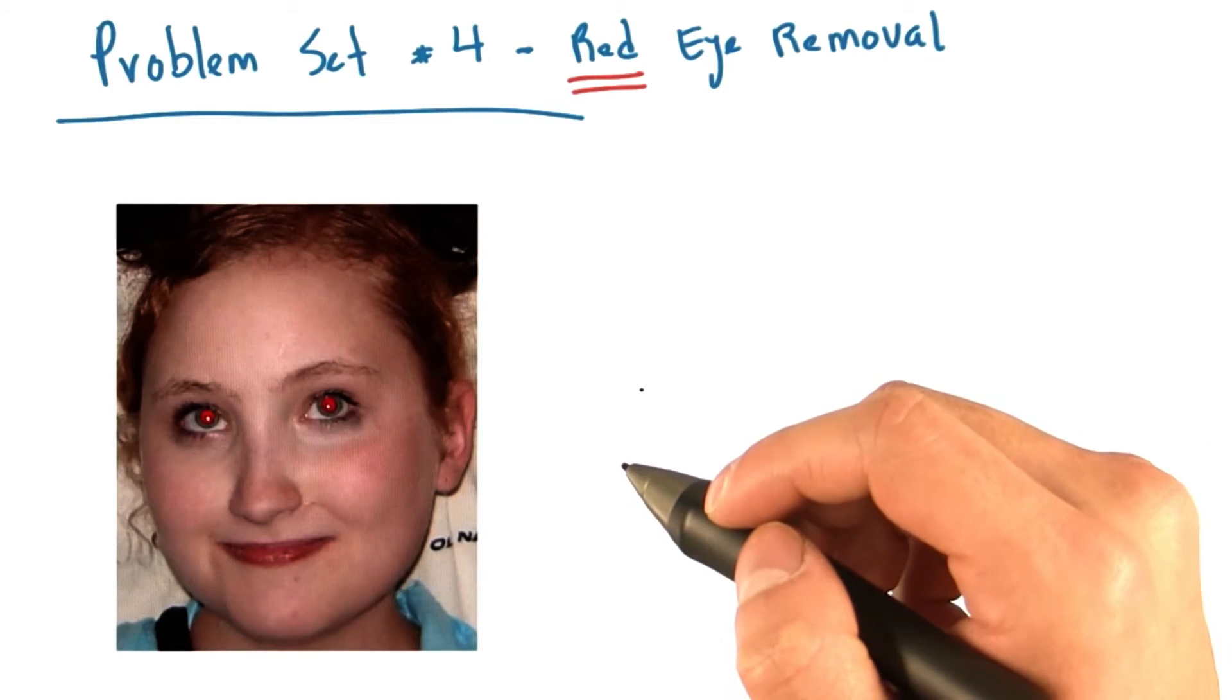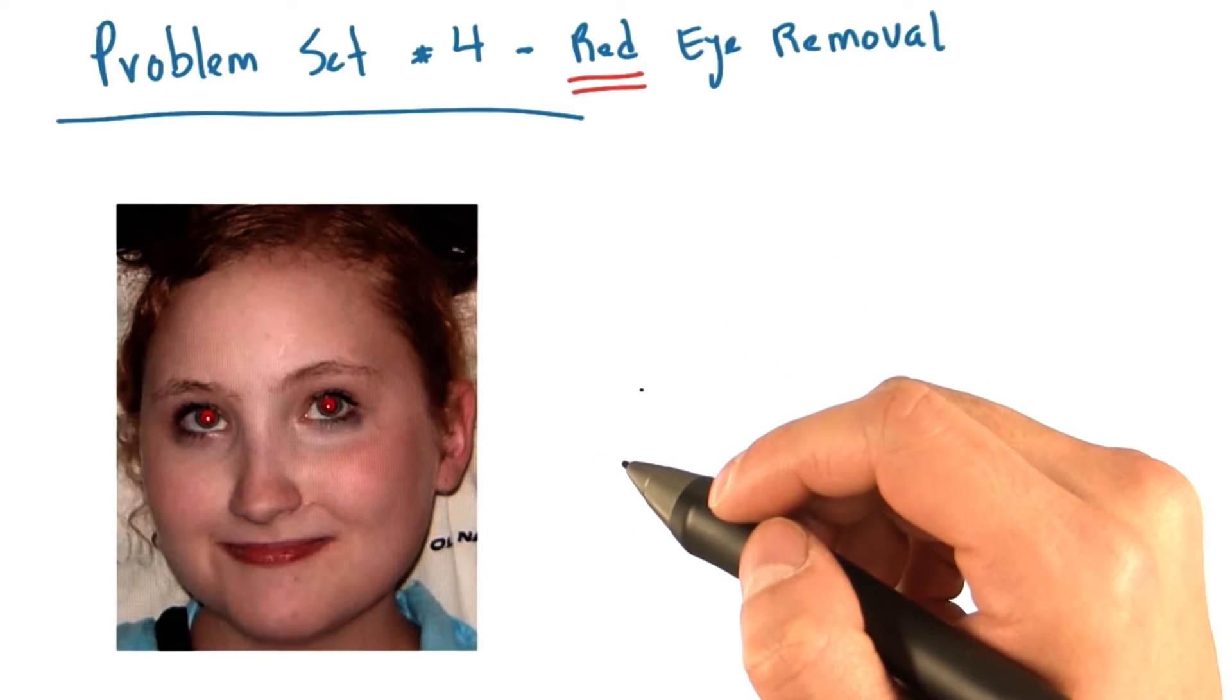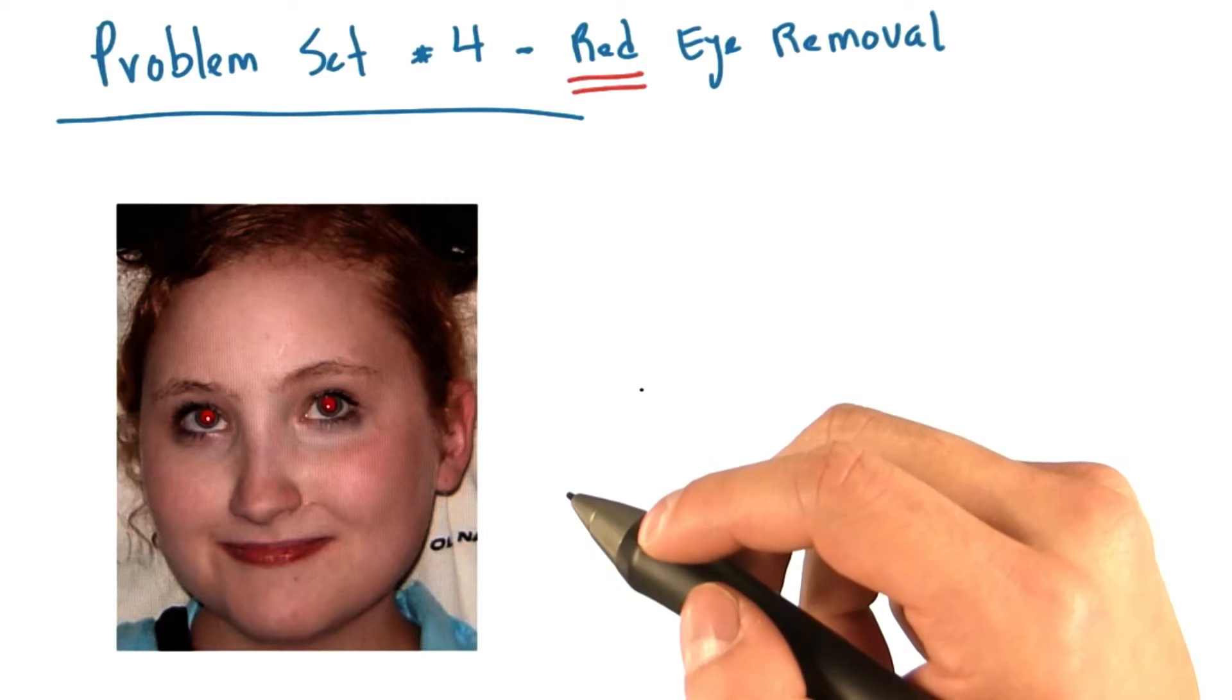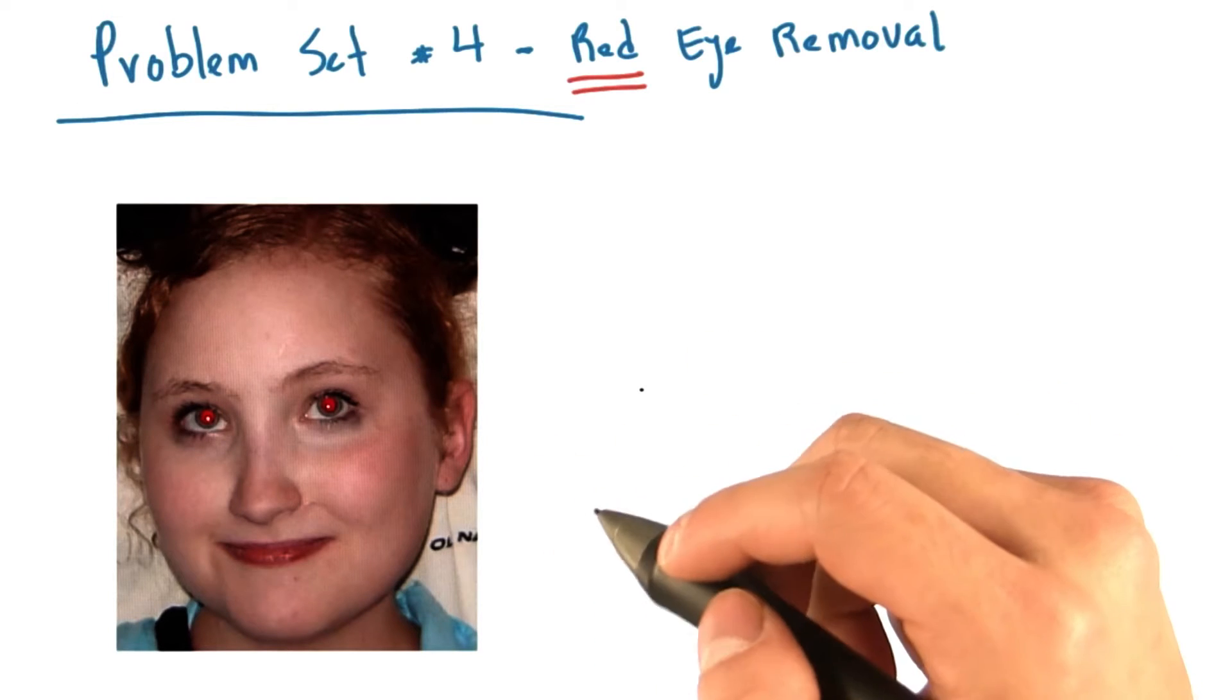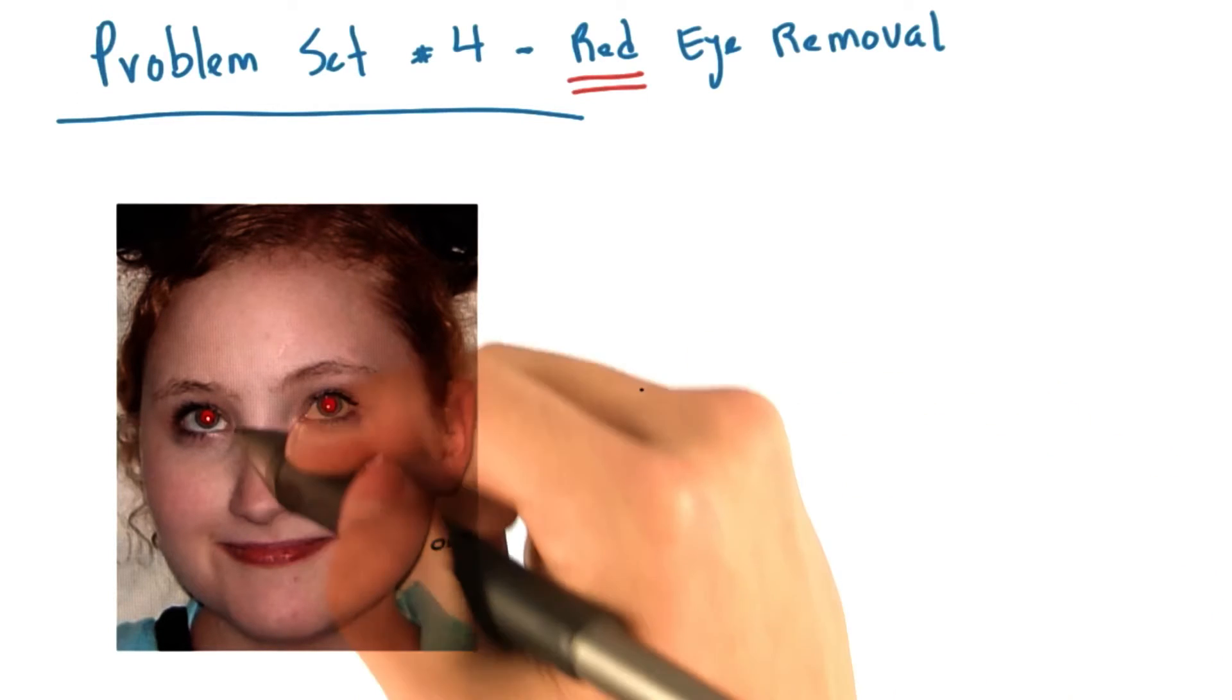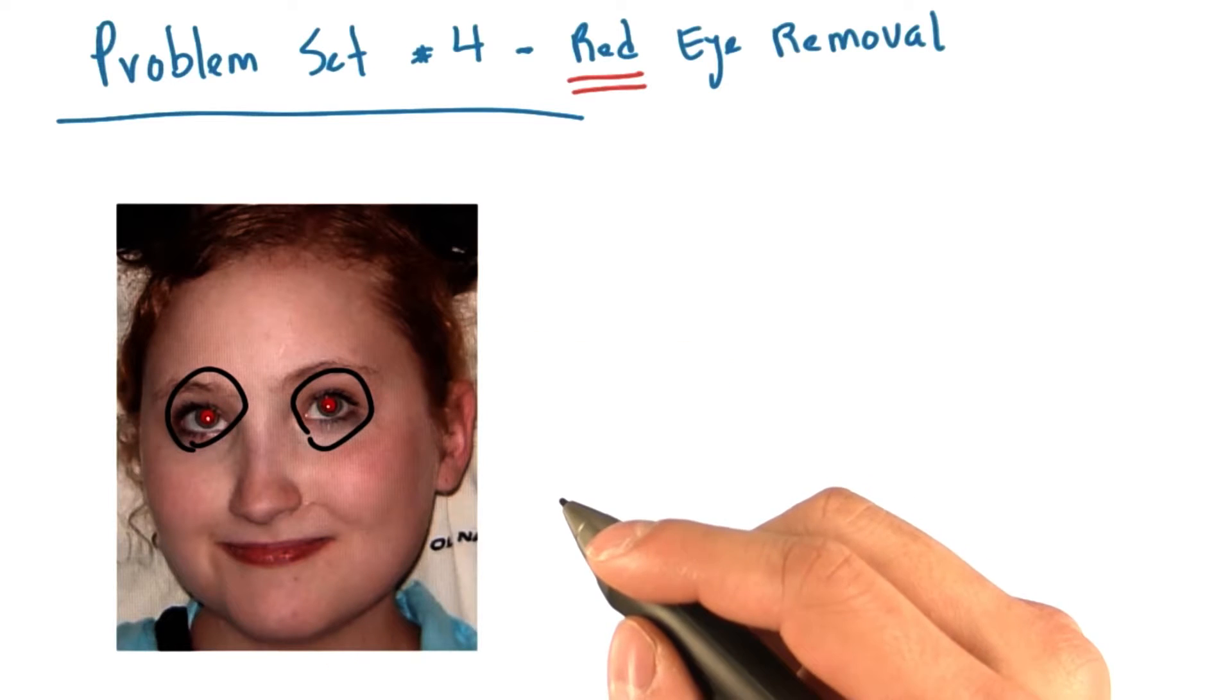In problem set number four, you will be implementing a parallel algorithm for removing the red-eye effect that commonly occurs in pictures of human faces. Here is an example of the effect that we are talking about.